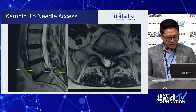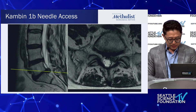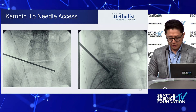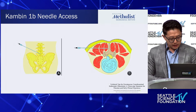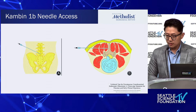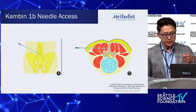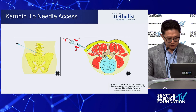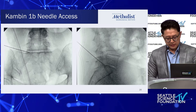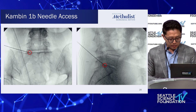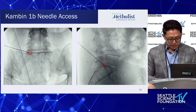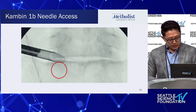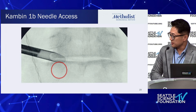Here's a Kambin 1b needle axis at L5-S1 for a paracentral disc herniation. I draw the surface marking with an AP line to avoid the iliac crest and the transischial line. When targeting with the needle, start dorsal and shallow to be safe — you can always redirect by walking off the bone to enter the foramen and avoid ventral structures. After placing the guidewire at the medial border of the pedicle at the posterior vertebral body, advance dilators and reamers, then place the working channel with the tip at the medial border of the pedicle.